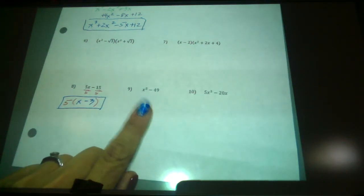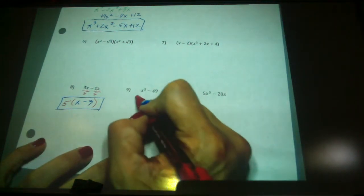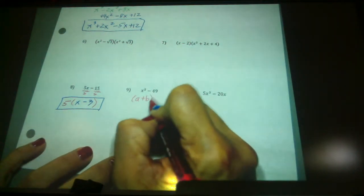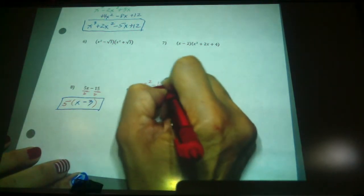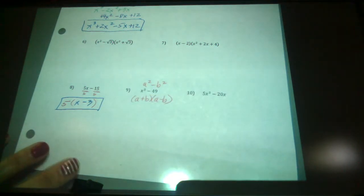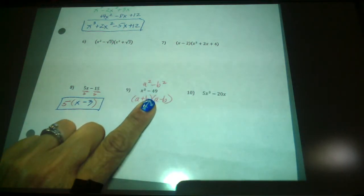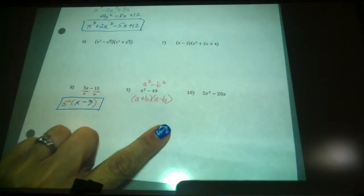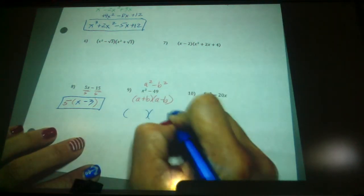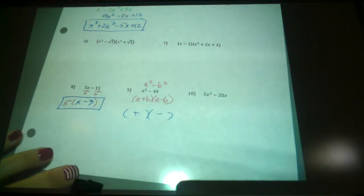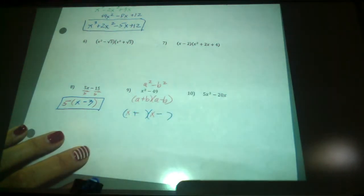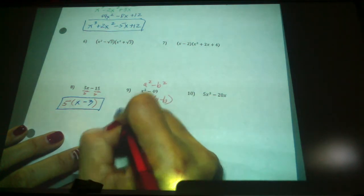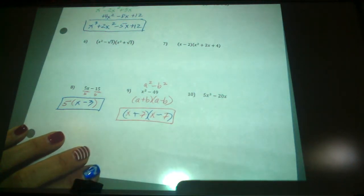What's this one? It's the difference of two squares, right? Because this is a squared minus b squared. So if you have a perfect square minus a perfect square, you factor it as (a plus b)(a minus b). Here are my binomials with my plus and minus. What's the square root of x squared? x. So x goes here and here. What's the square root of 49? 7 and 7.